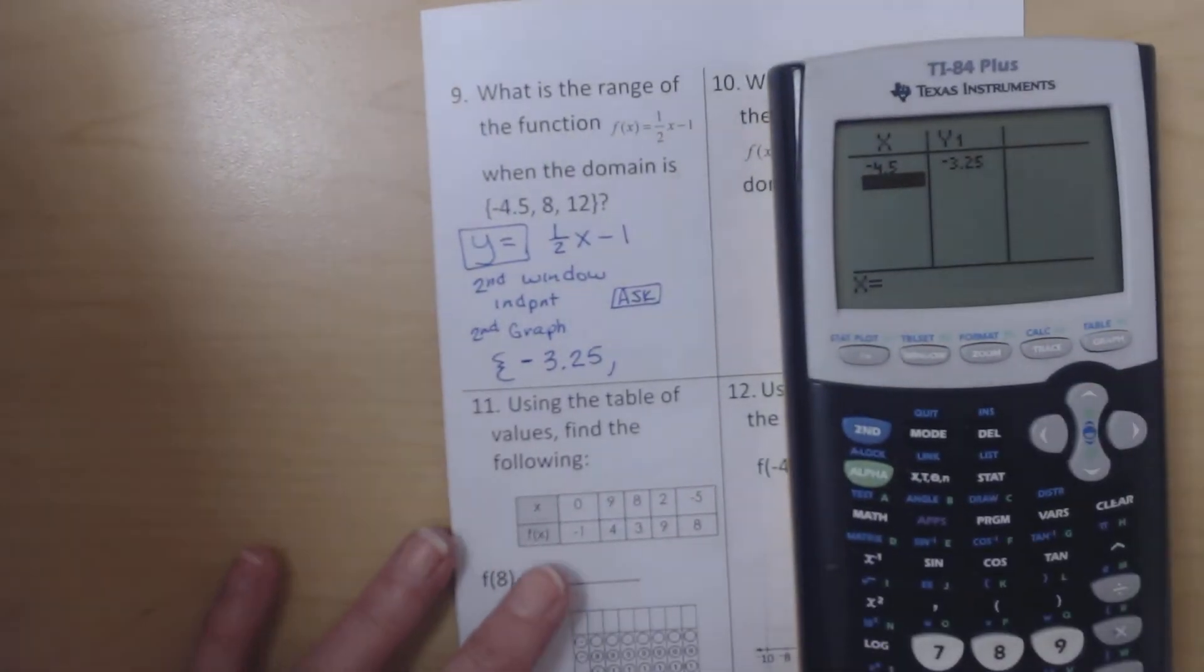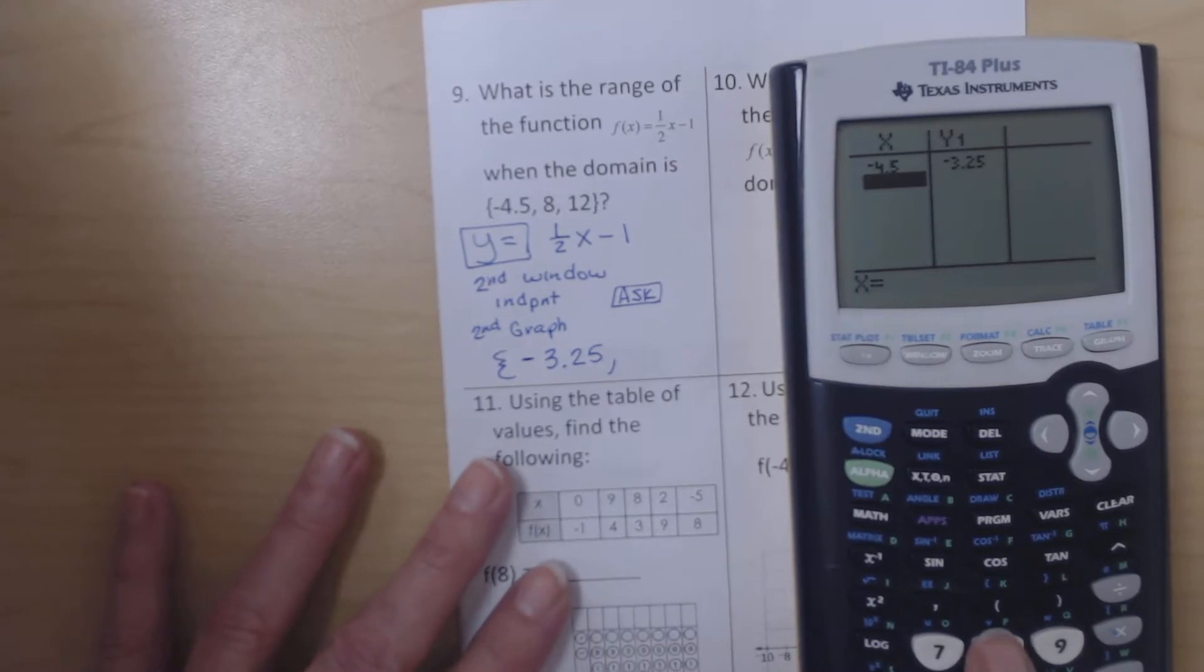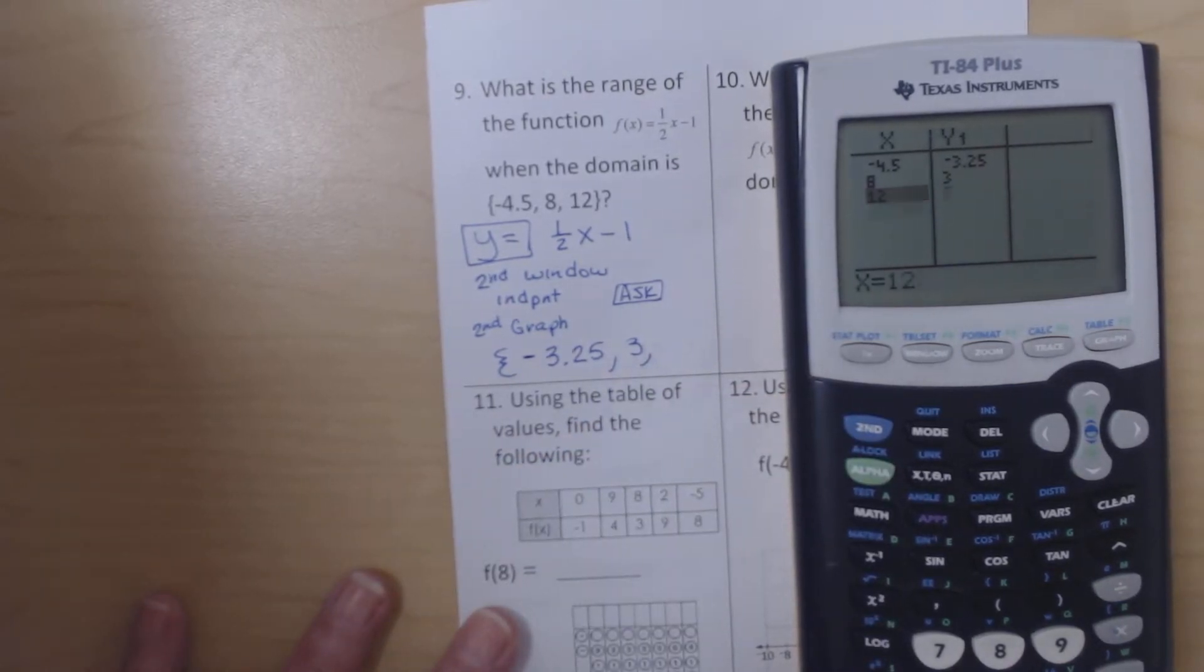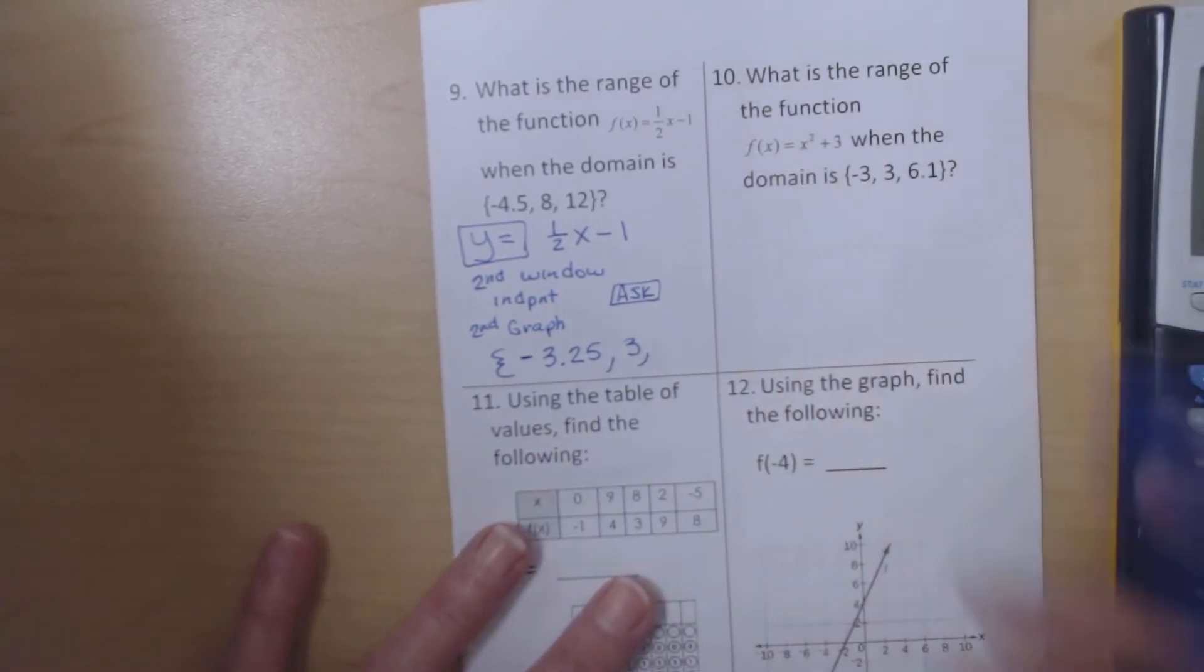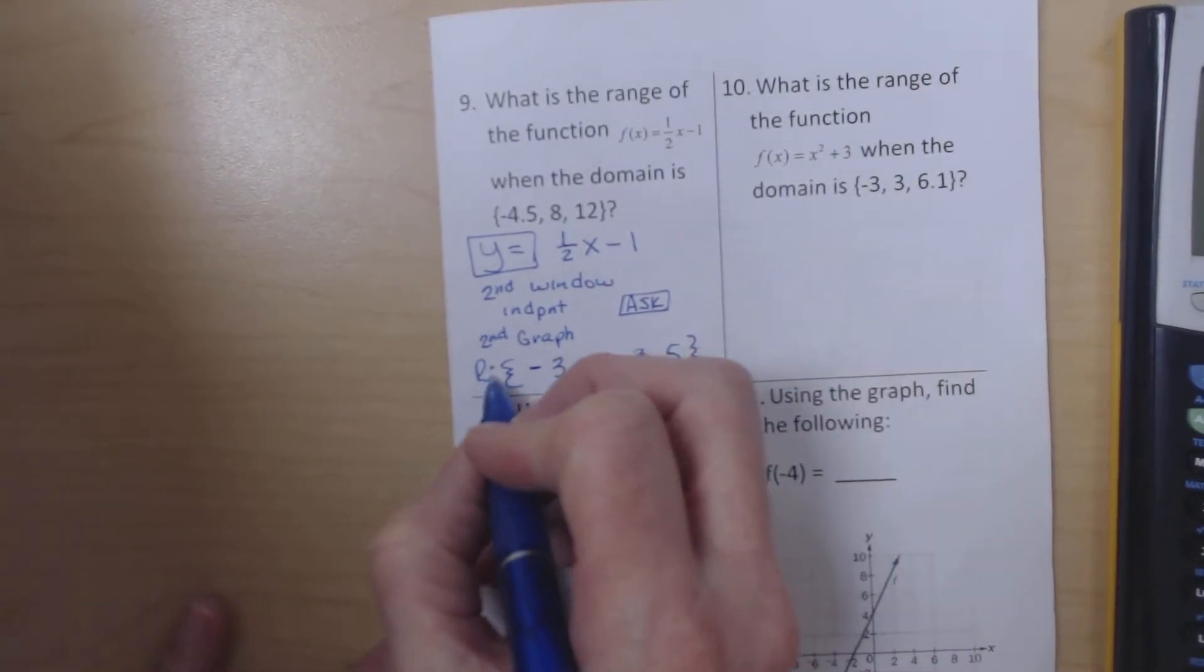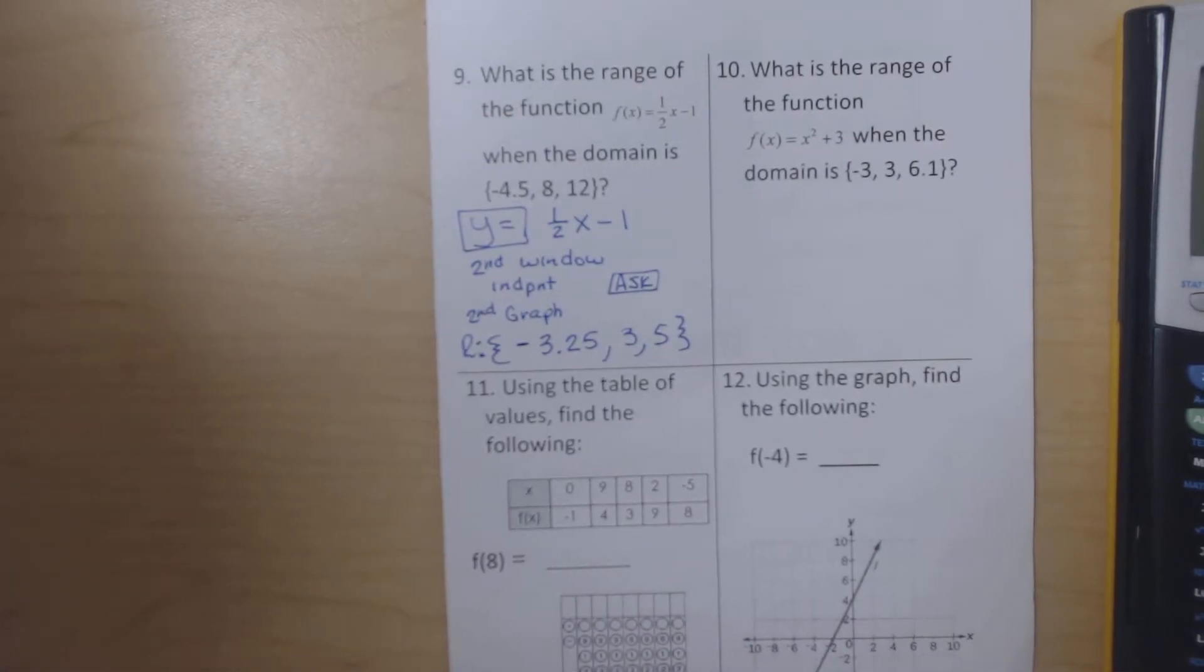So our first range value is going to be -3.25. And while we found those other two numbers a moment ago in the table, I'm going to go ahead and redo those here. We still end up with 3, and our 12 should give us 5. And it does. So there is our range when the domain is -4.5, 8, and 12.